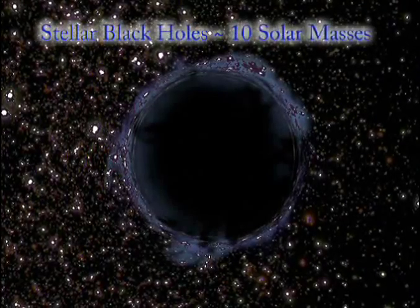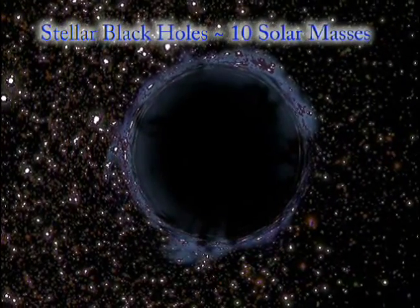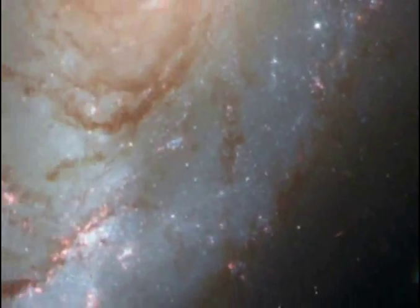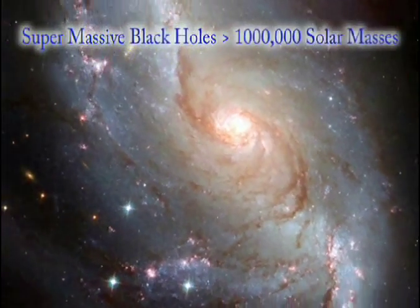Today, two types of black holes have been discovered. First one being stellar black holes, which have about 10 times the mass of our sun. And also supermassive black holes, which have more than a million times the mass of our sun.